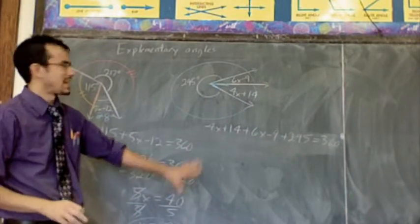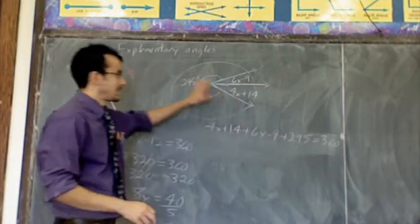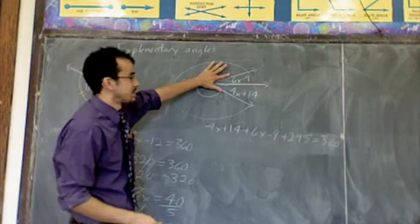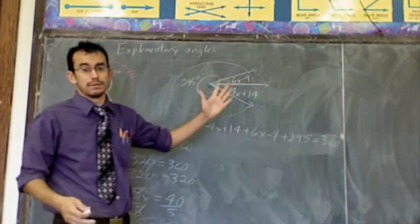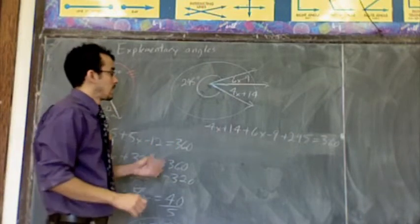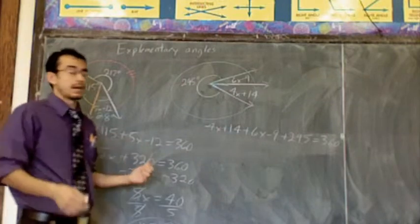And I know that since they're explementary angles, they form a circle. Together they make 360 degrees. One common mistake I see a lot. I see people add these and say that it equals 295. It's a different angle. You can clearly see this is acute. This is probably less than 90. It can't possibly equal 295. So definitely don't do that.